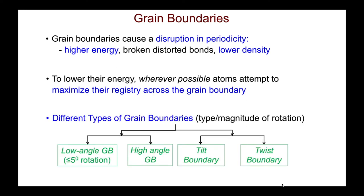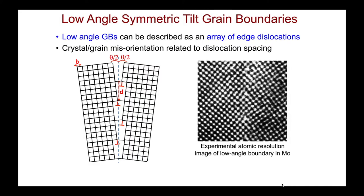There are different types of grain boundaries classified according to the type and magnitude of rotation of the respective grains — ranging from low-angle grain boundaries (less than about five degrees), to higher angle grain boundaries, tilt boundaries, and twist boundaries. These can get extremely complicated with many degrees of freedom in the rotation. Instead, we'll focus on lower-angle grain boundaries and see how atoms at the boundary retain some semblance of the overall crystallographic structure by forming defects that minimize the disruption.